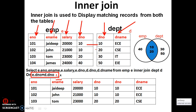The join condition works by joining every row of the left table with every row of the right table. So 10 equals 20 — false, don't retrieve. 10 equals 30 — false. 10 equals 50 — false. Then the second record: 10 equals 10 — condition is true, so display 102, John, 21010, 10 ECE.